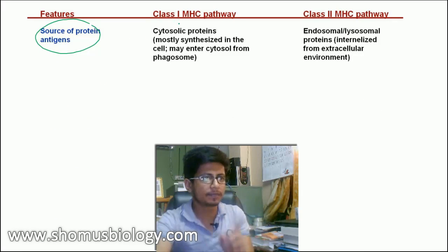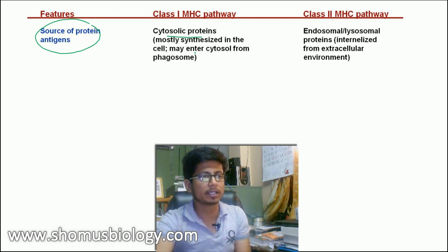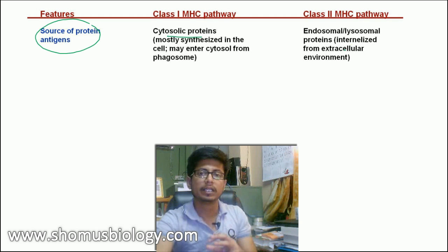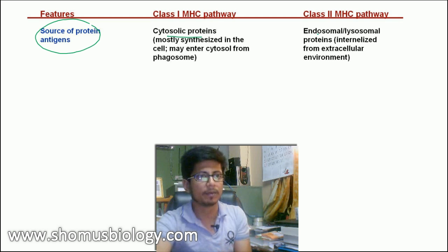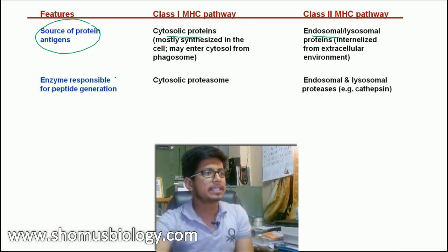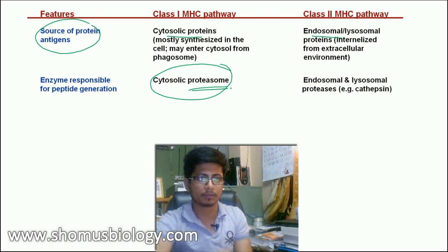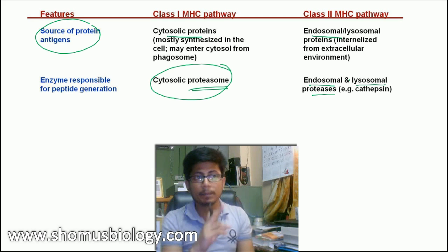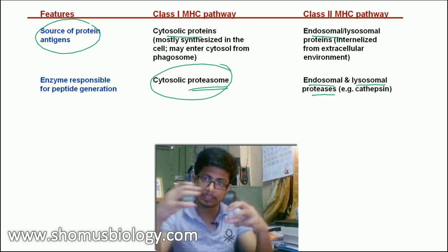The source of the protein antigen also differs. For MHC class 1, it is a cytosolic protein — fragments of a virus that entered the cell, or proteins specifically produced by tumor cells, which can be presented as antigen via MHC class 1. For MHC class 2, the source is exogenous because a phagocytic cell must engulf the pathogen from outside using endosomal-lysosomal fusion. The enzymes responsible for peptide generation differ as well: for MHC class 1 it is cytosolic proteasomes, and for MHC class 2 it is endosomal-lysosomal proteases.